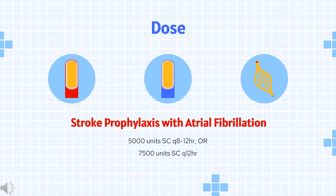Unstable angina / NSTEMI: initial IV bolus of 60–70 units/kg (max 5,000 units), then initial infusion of 12–15 units/kg/hr (max 1,000 units/hr). Dose should be adjusted to maintain APTT of 50–70 seconds.